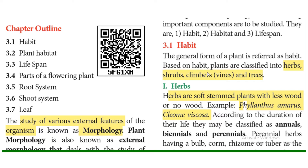Based on habit, plants are classified into four types: herbs, shrubs, climbers, and trees.